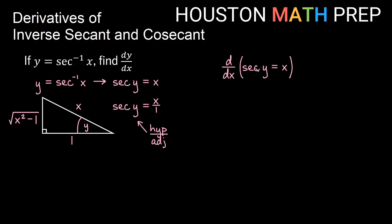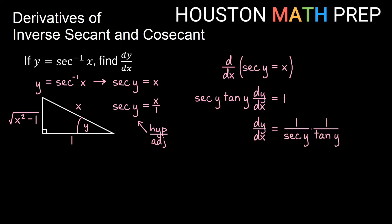Moving to taking the derivative implicitly, the derivative with respect to x of secant y — remember the derivative of secant of something is secant tangent of that something. With implicit differentiation, because this has a y term, we need to multiply by the derivative of the inside, which gives us dy/dx on the left. The derivative of plain x on the right gives us 1. To solve for dy/dx, we divide by the secant and tangent functions, getting 1 over secant y times 1 over tangent y.